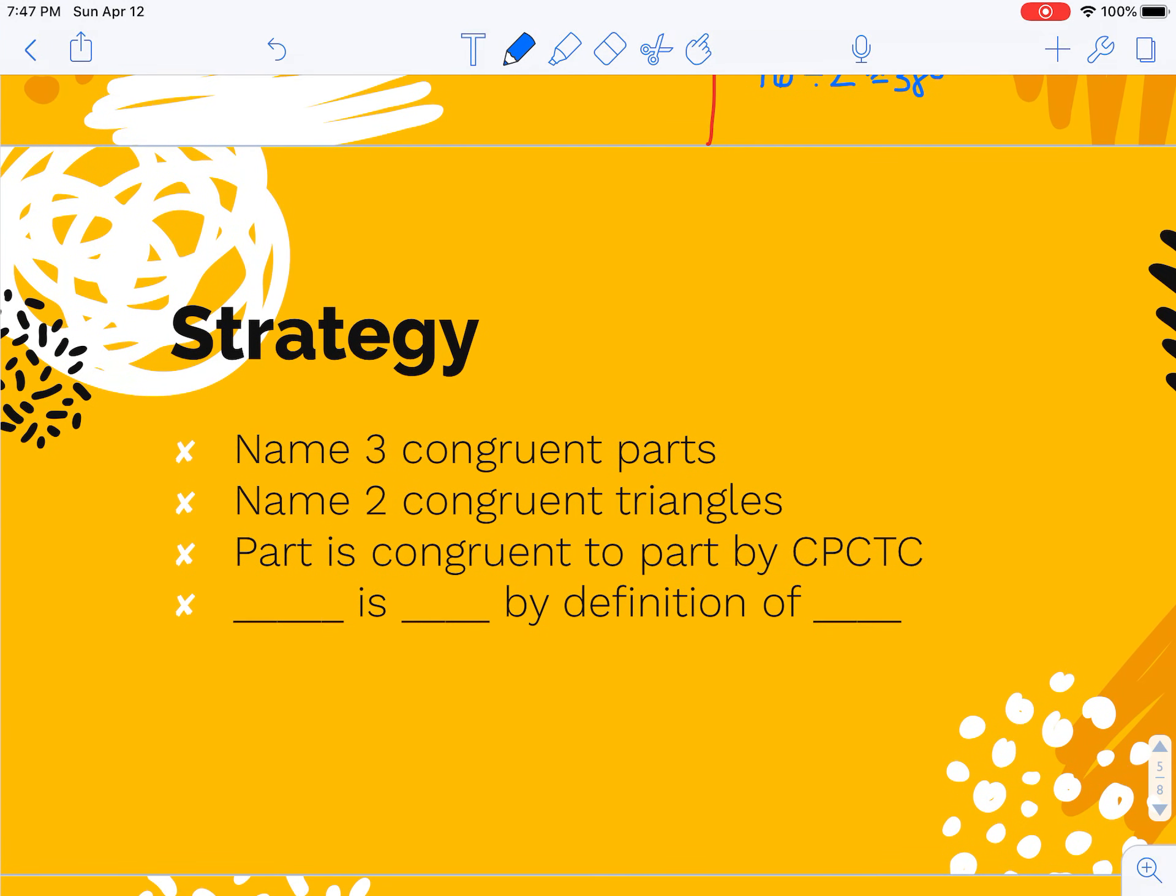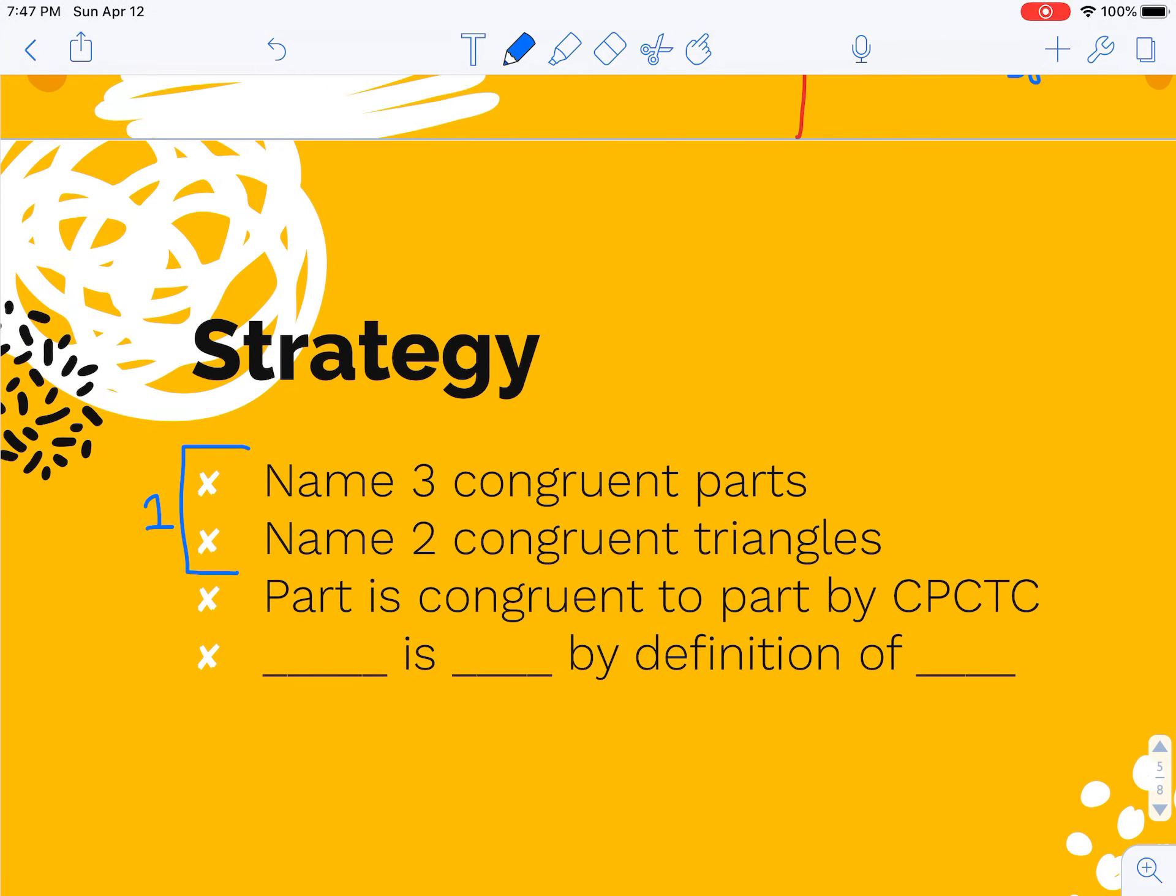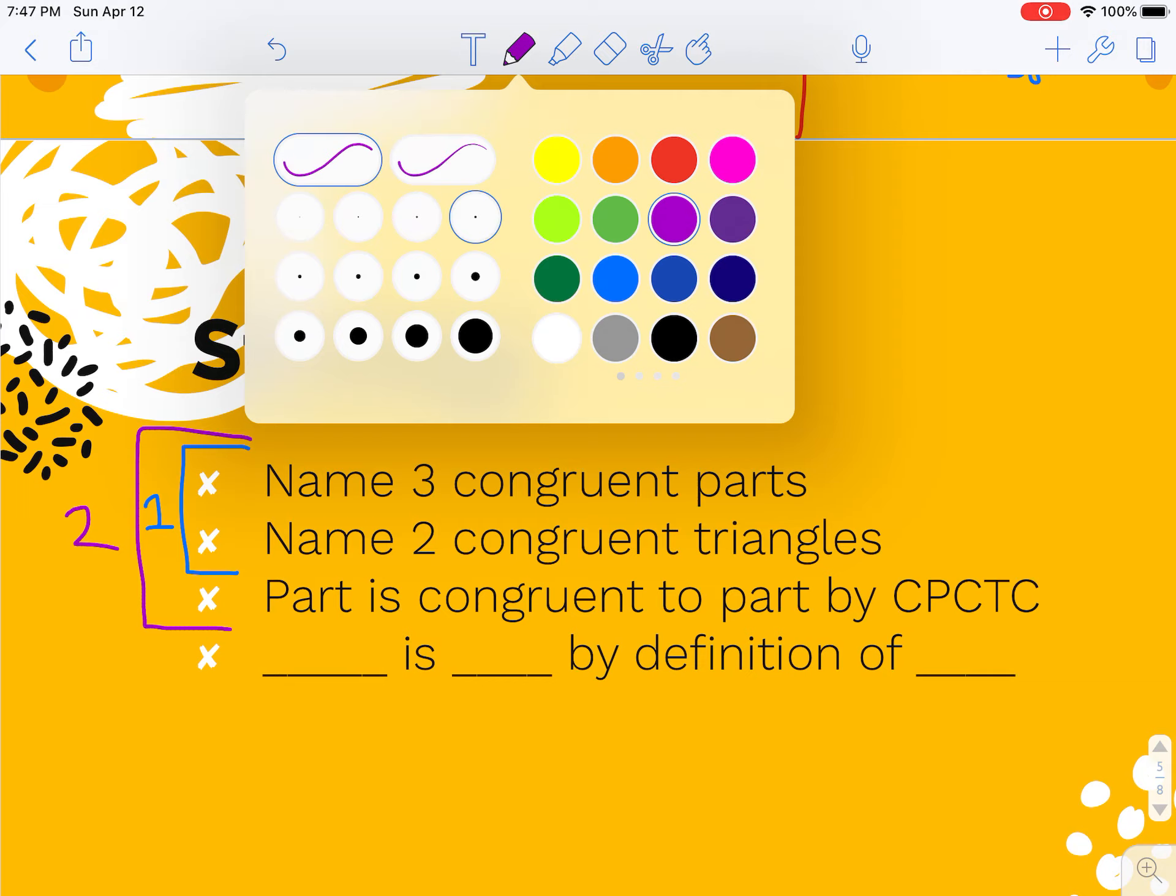When I'm writing proofs for these, my strategy is going to remain mostly the same. I'm just adding one more line. So I kind of think of LR3 as a step one proof. You did this much for that whole chapter. You found three congruent parts, and then you said this triangle is congruent to that triangle by whichever shortcut.